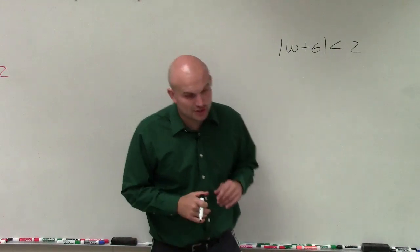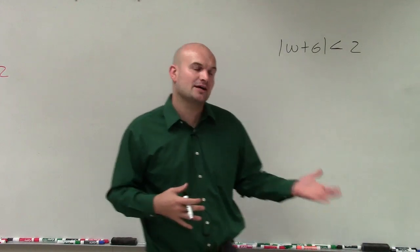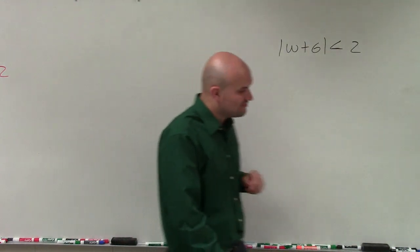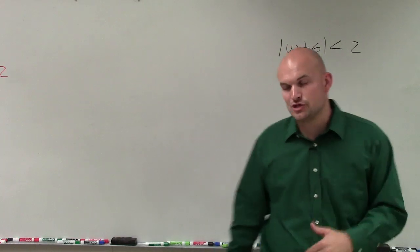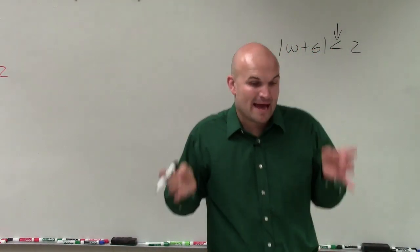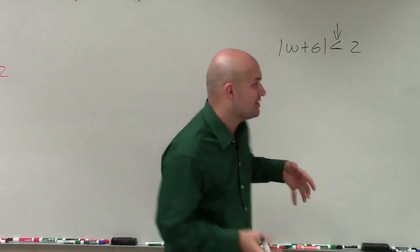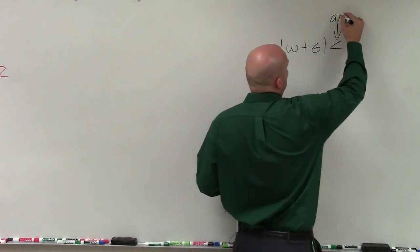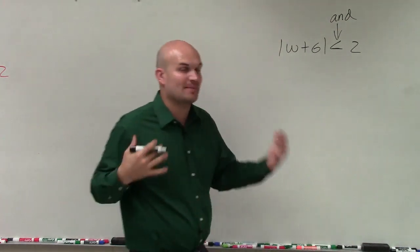Welcome, ladies and gentlemen. So what I'd like to do is show you how to solve and graph the absolute value inequality. In this case, I have the absolute value of w plus 6 is less than 2. I notice that my inequality here is a less than, or my absolute value is less than its value. Therefore, this is going to provide a compound inequality of and when I create my two cases.